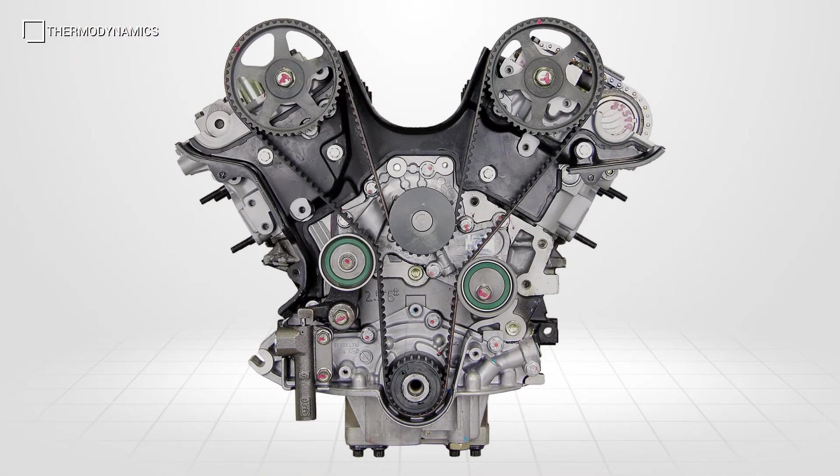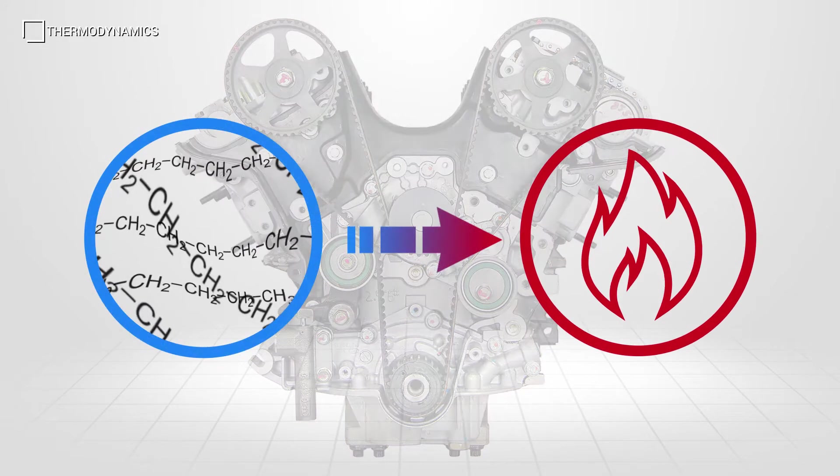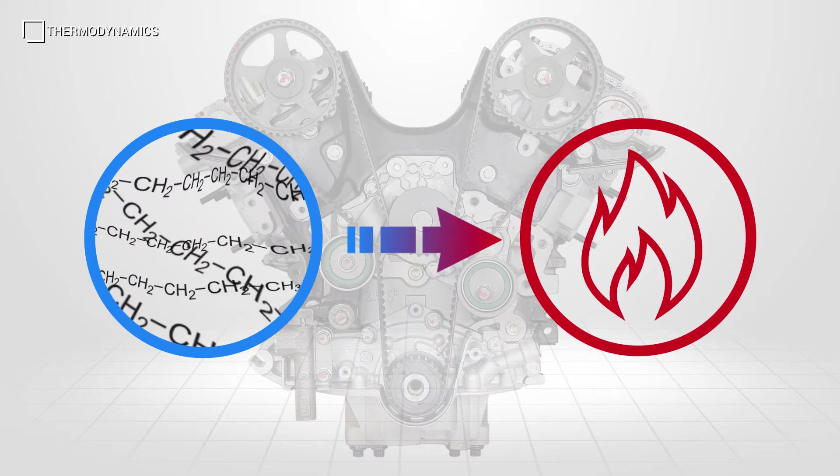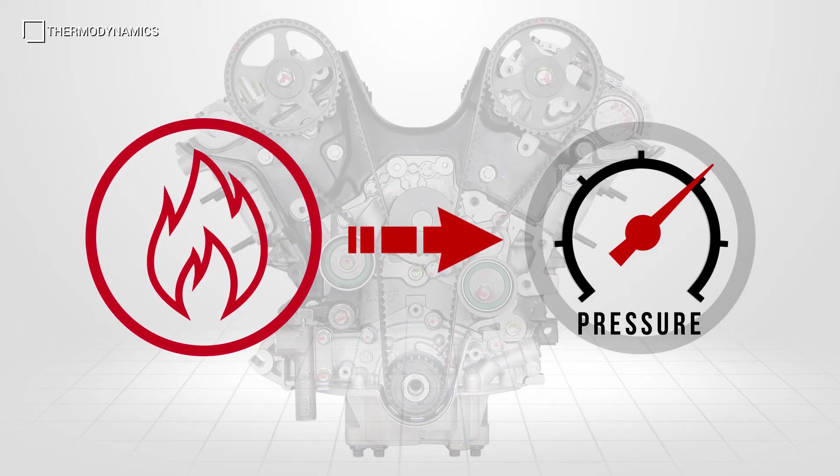The basic principle of operation for any internal combustion engine is to use the heat energy from burning a hydrocarbon fuel to create large amounts of heat. Heat energy can be used to create pressure, which can then be used to exert force upon an object.